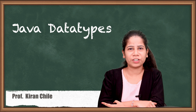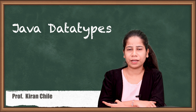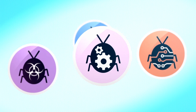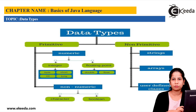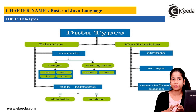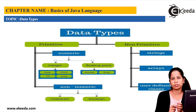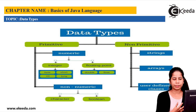Hello friends, in the last lecture we saw how to write our first Java program. Now we are going to see how we can use data types and what the different data types Java allows. Basically, Java data types are divided into primitive data types and non-primitive data types. In today's lecture we are going to focus on primitive data types.